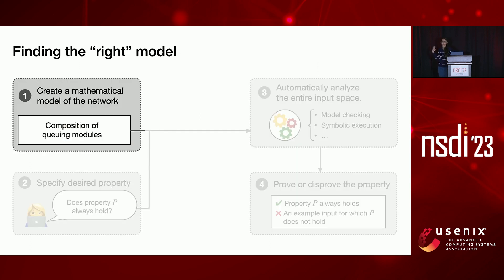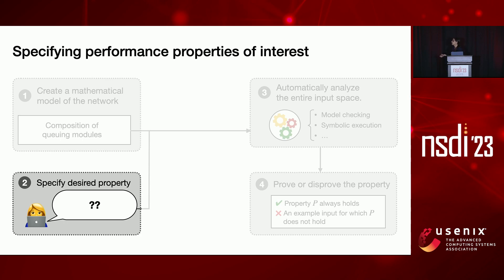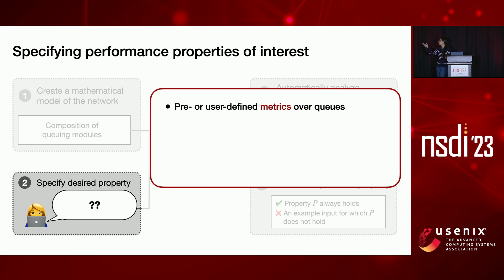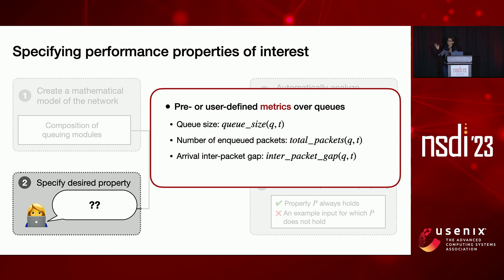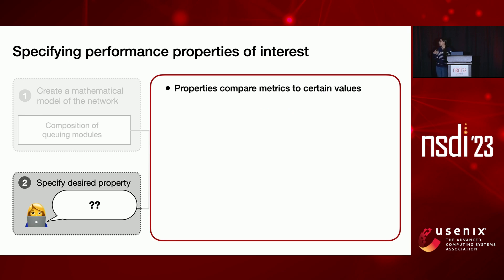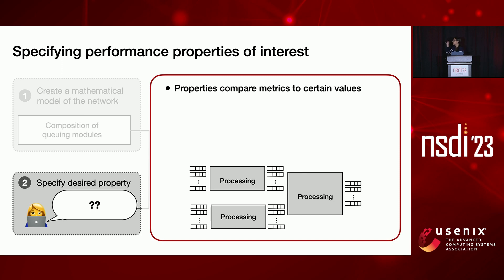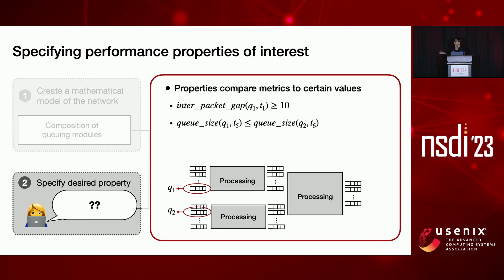The model is a composition of queuing modules. Now, onto the properties — how do you specify the performance properties you're interested in? First you define the performance metrics, which in our model are defined over queues: the size of a queue, the total number of packets that have entered, the inter-arrival gap between packets, and any other metric of interest. These can be predefined or user-defined. Then the property compares metrics against certain values — for example, comparing a metric for a single queue to a threshold, comparing a metric between two queues, or comparing the sum of a metric over a set of queues to a threshold.